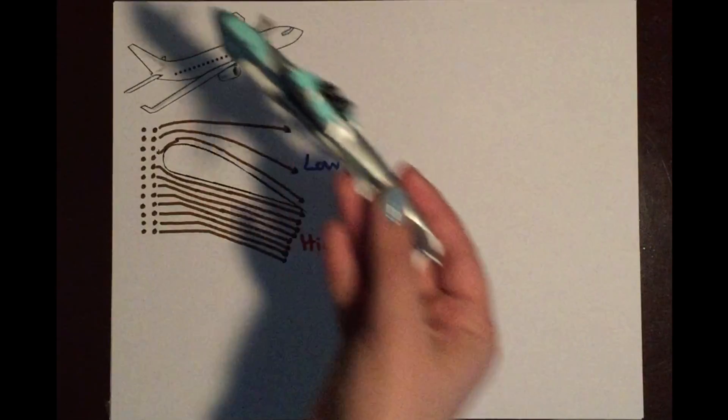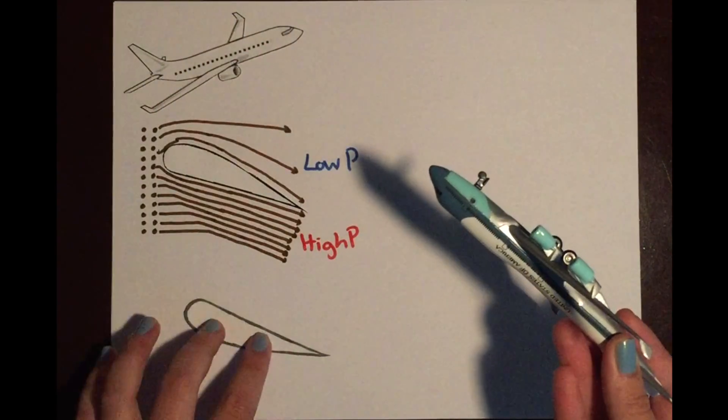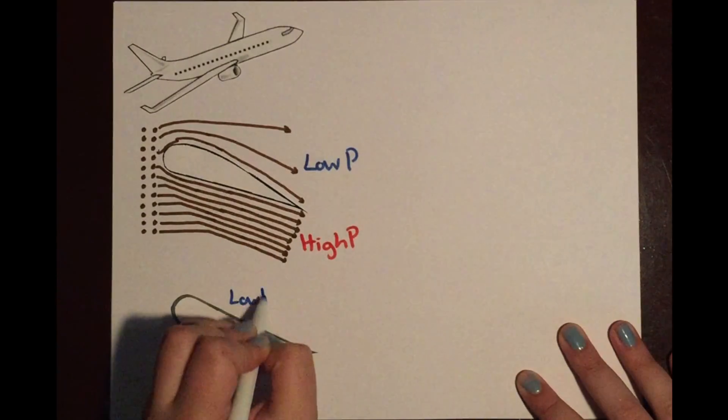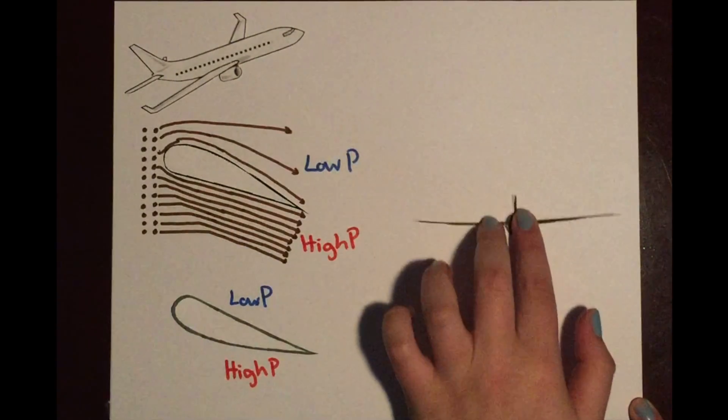But what if the plane is flying upside down? Well, as long as the nose of the plane is still pointed up, the air particles will still be affected in the same way. Okay, so let's get back to our original question.